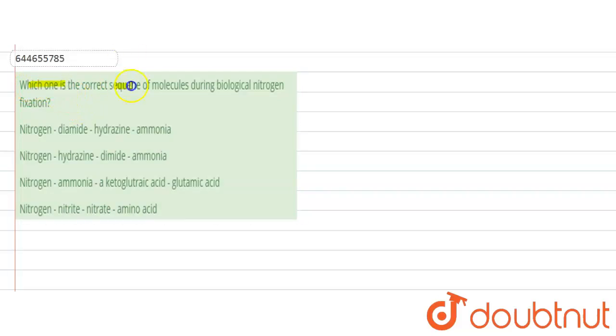So the question is: which one of the following is a correct sequence of molecules during biological nitrogen fixation? The options are: nitrogen, diamide, hydrazine, ammonia; nitrogen, hydrazine, diamide, ammonia; nitrogen, ammonia, alpha-ketoglutaric acid and glutamic acid; and nitrogen, nitrite, nitrate, and amino acid.